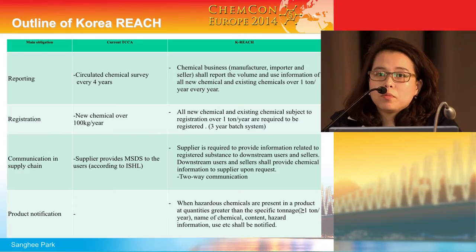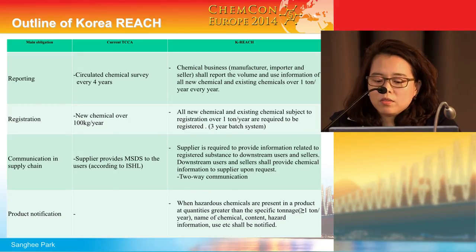The last requirement is product notification. When a hazardous chemical is present in a consumer product in a quantity greater than a specific tonnage — more than one ton per year — some of the information must be notified to the government in advance.